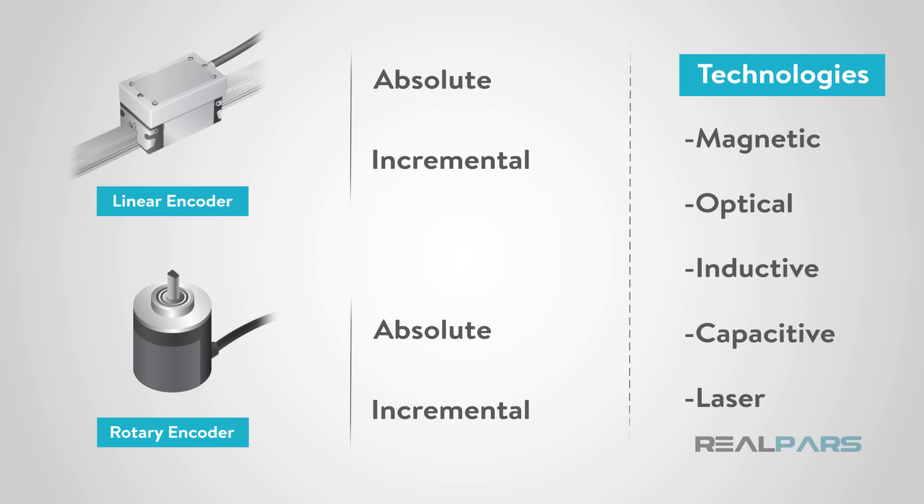There is a plethora of information regarding encoders, and it may seem hard to wrap your head around it — descriptions like Rotary or Linear, Optical and Magnetic, Absolute and Incremental. We touch on a few basics to help you understand what's what and why, and let's first break these categories down a little and explain a couple of the many configurations.